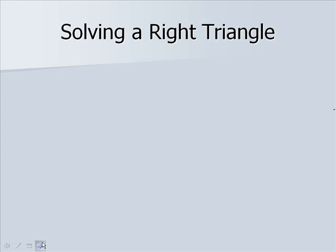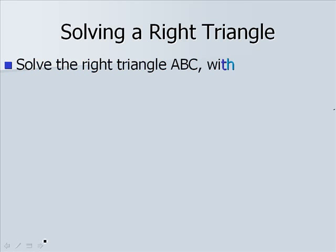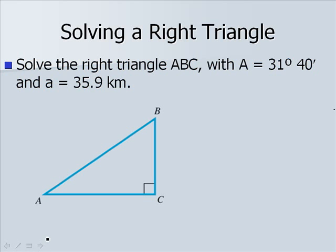Let's do an example. We want to solve a right triangle. In this first one, we have angle A is 31 degrees 40 minutes, and side a is 35.9 kilometers. I'm going to label our triangle here, and our side opposite angle A would be side a. The remaining sides, we know that angle C is 90 degrees in our right triangle here, so we need to find angle B, side b, and side c.